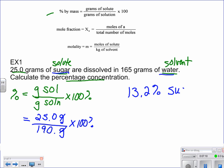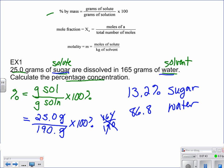So this is a 13.2% sugar solution, meaning the rest of it is water. We could do 165 over 190, or we can just subtract to get 86.8% water. On a test or quiz, it would definitely be spelled out as to what's expected, but it's easy enough to do it for both.